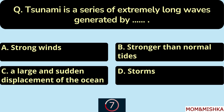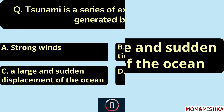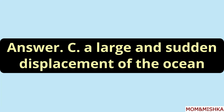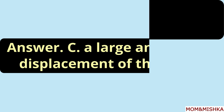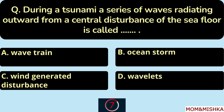What does the term tsunami mean in Japanese? It means harbor wave — option D. A tsunami is a series of extremely long waves generated by a large and sudden displacement of the ocean — option C.